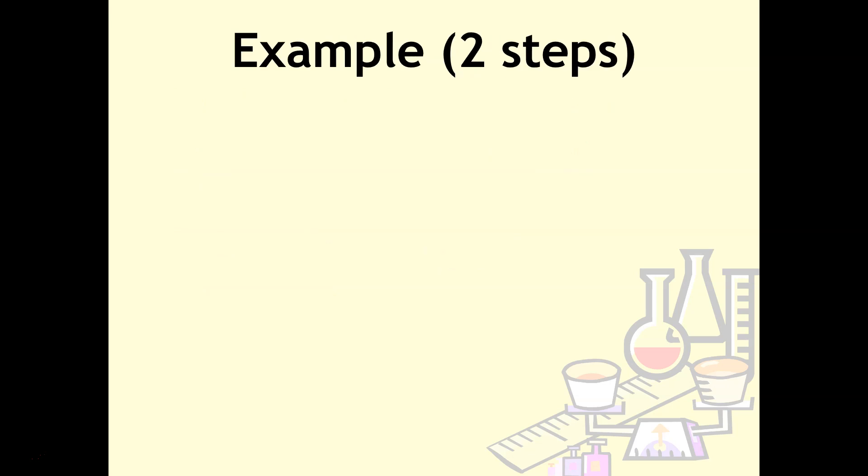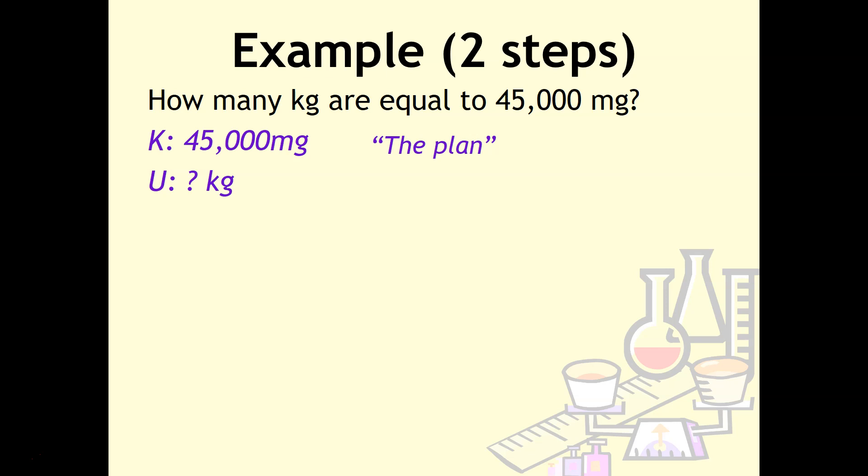This is an example of a two-step problem. How many kilograms are equal to 45,000 milligrams? As usual, we've got our known and unknown. The plan looks a little different because we don't have a conversion factor that directly goes from milligrams to kilograms. However, we have conversion factors from milligrams to grams and from grams to kilograms. So the plan now has two steps: milligrams to grams, then grams to kilograms. We'll use 1,000 milligrams equals one gram, then 1,000 grams equals one kilogram. This is a two-step problem because you've got two conversion factors.